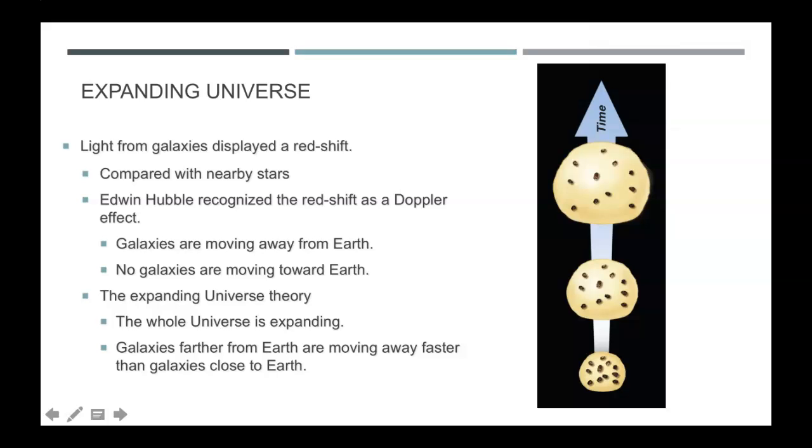The astronomer Edwin Hubble in the 1920s was looking at stars and noticed that galaxies displayed the red shift. So that longer wavelength, meaning they were moving away from our solar system. So it was revealed that all of the galaxies had the red shift.